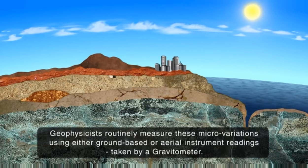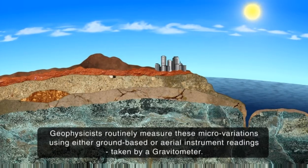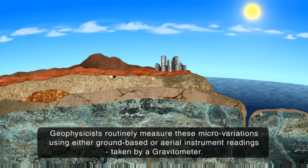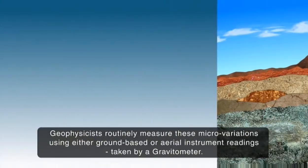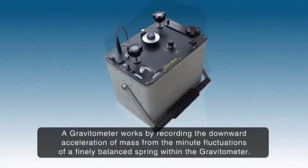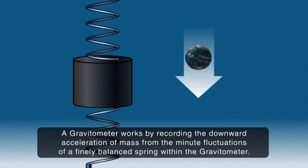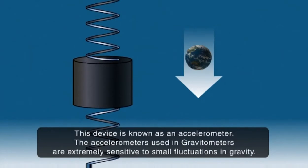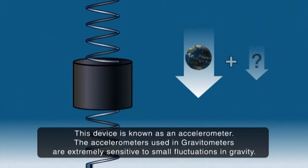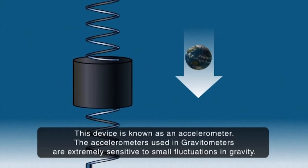Geophysicists routinely measure these micro-variations using either ground-based or aerial instrument readings taken by a gravitometer. A gravitometer works by recording the downward acceleration of mass from the minute fluctuations of a finely balanced spring within the gravitometer. This device is known as an accelerometer, and the accelerometers used in gravitometers are extremely sensitive to small fluctuations in gravity.